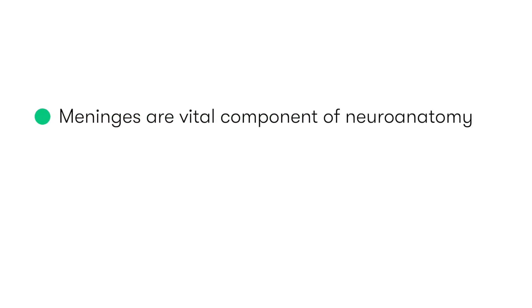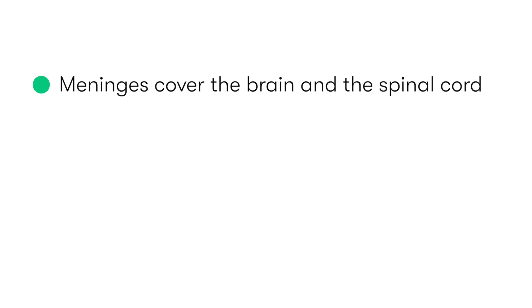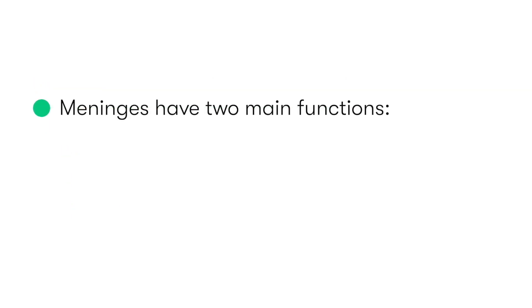The meninges are a vital component of neuroanatomy, and it's extremely important that we have a detailed understanding of both their structure and function. The meninges are membranous layers that cover both the brain and the spinal cord. They consist of three layers: the outer layer is the dura mater, the next inner layer is the arachnoid mater, and the very innermost layer which sits directly upon the brain is the pia mater.